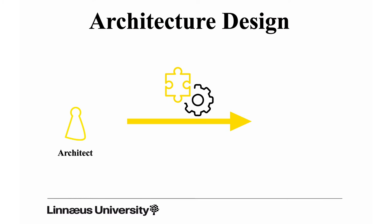Architecture design is a critical activity. If you try to structure it into distinct steps, the first step focuses on the architecturally significant requirements — we've been through that in a previous theme. When the architect faces an ASR, they are expected to find a design that addresses the concerns expressed in the requirement, and they have to start looking for options for their architecture decisions.